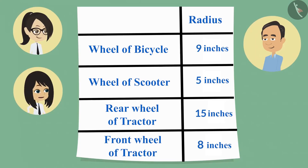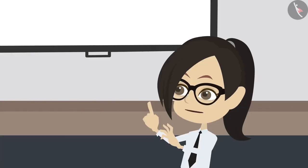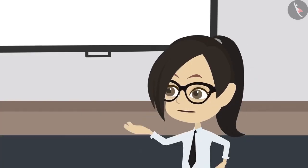Sir, the wheel of a bicycle is bigger because its radius is 9 inches, which is more than the radius of the wheel of the tractor, which is 8 inches. This means when we know the radius or diameter of a circle, we can tell whether it is big or small without looking at the circle. Yes, absolutely correct.